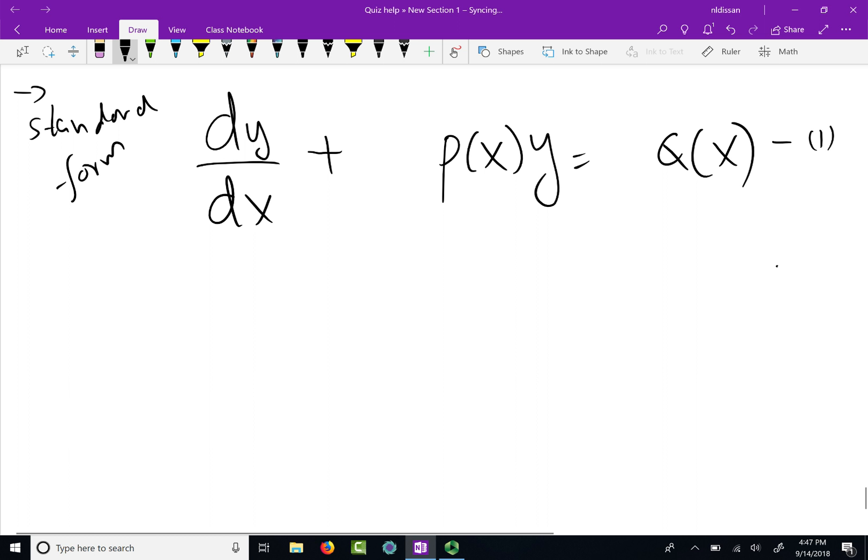Now, once you have the standard form, once you have identified P, we can find the integrating factor. Remember, what is integrating factor? μ is E to the integral of P, right? You do an integration on the exponent of E. That will be the integrating factor all the time.